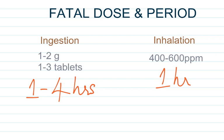The fatal dose on ingestion is 1-2 grams or 1-3 tablets, and the fatal period is 1-4 hours. Inhalation of Phosphine at a concentration of 400-600 parts per million is fatal within 1 hour.